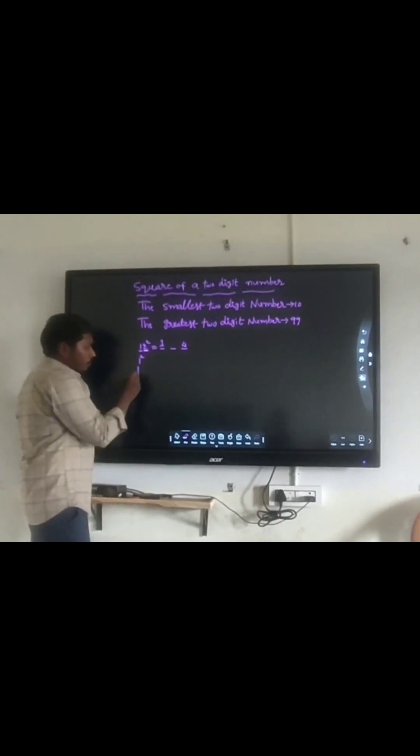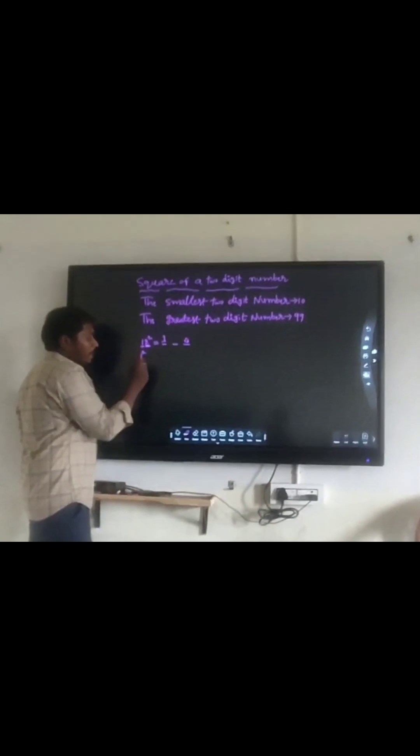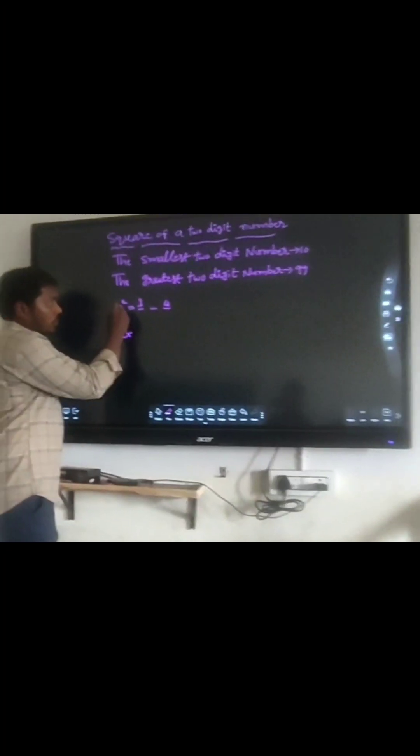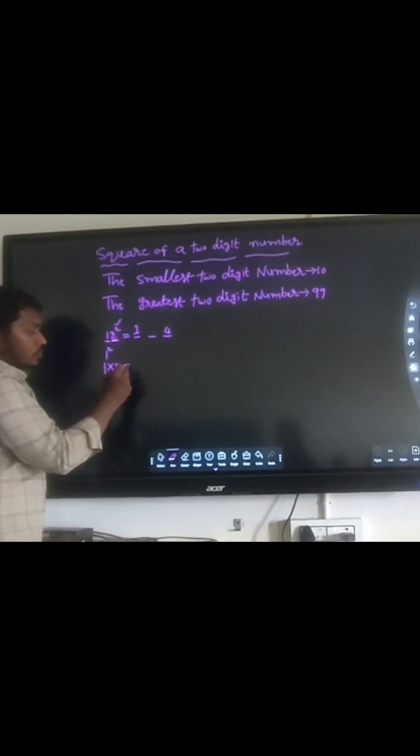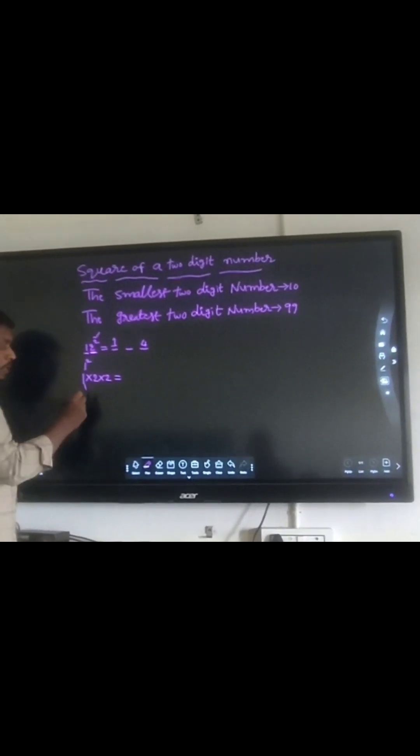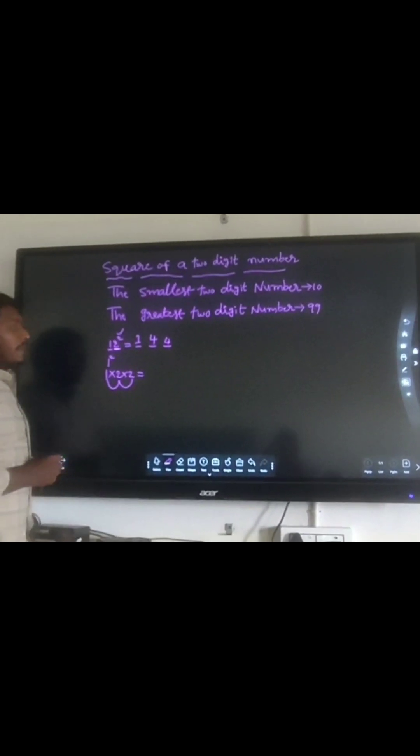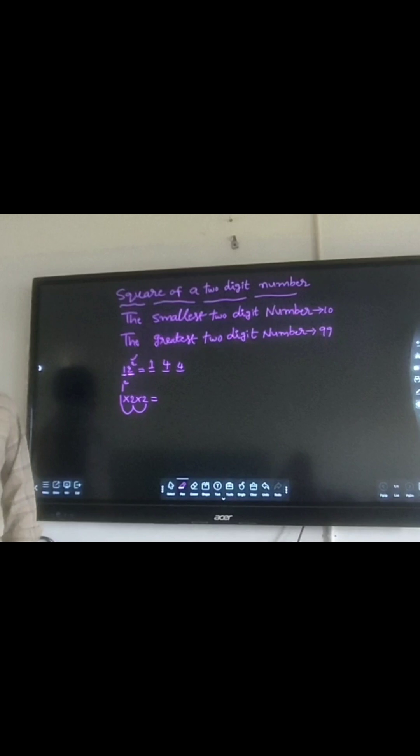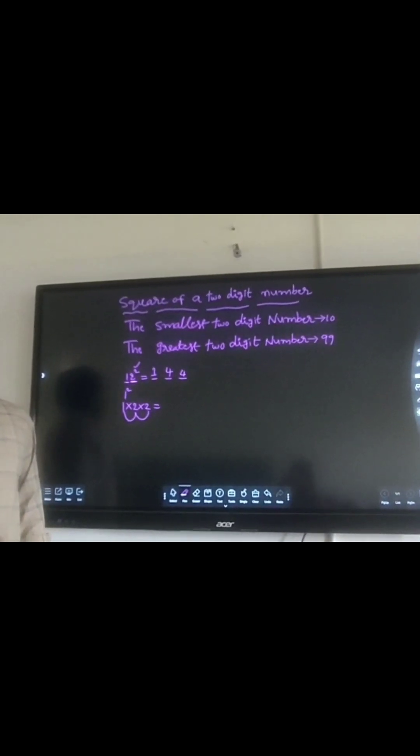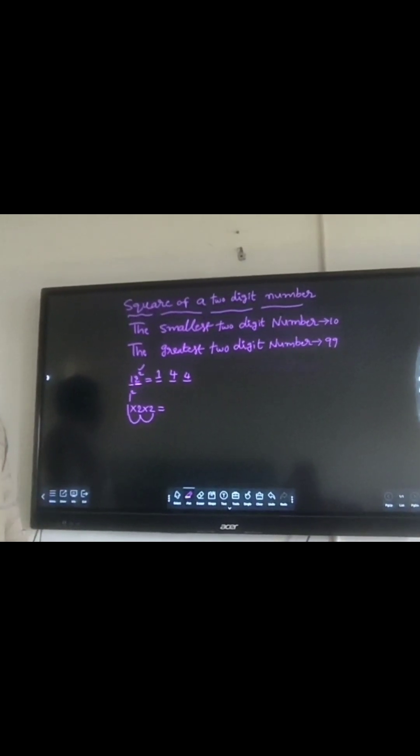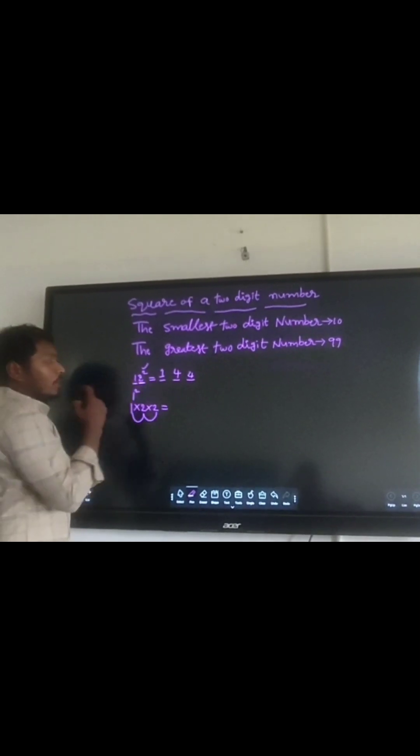Multiply 1 into 2 and then multiply by 2. So 1 times 2 is 2, times 2 is 4. That's the middle digit. So 12 square is 144. With more practice, you can get the answer very fast. So 12 square equals 144. Let's take another example.